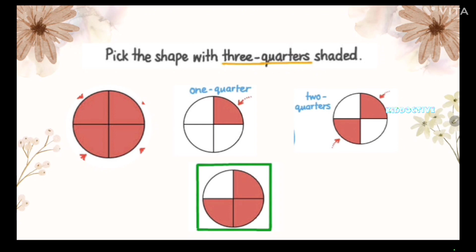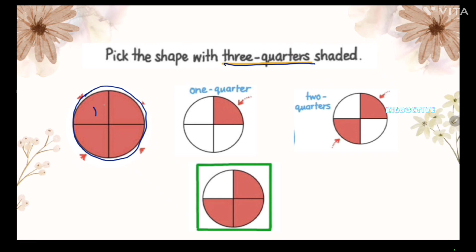In the previous video we learned fractions like one third, half, and one fourth. In today's video we are going to learn three fourths. Three fourths means we can also say three quarters. Pick the shape with three quarters shaded. This is the whole, divided into four equal parts: one, two, three, and four.